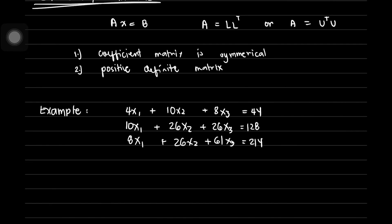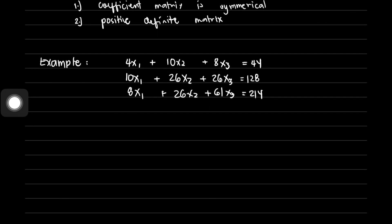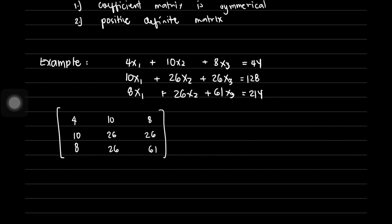To illustrate how to use Cholesky's method, let us have a system of linear equations with three unknowns. The coefficient matrix is: first row 4, 10, 8; second row 10, 26, 26; third row 8, 26, 61. We multiply this by the vector X1, X2, X3, and that equals the constant matrix 44, 128, and 214.